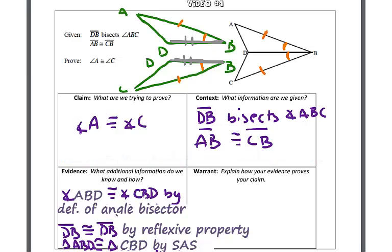If these triangles are congruent, that means all of their corresponding parts are congruent. So the last statement for our warrant is that angle A is congruent to angle C, and that's by the CPCTC statement.